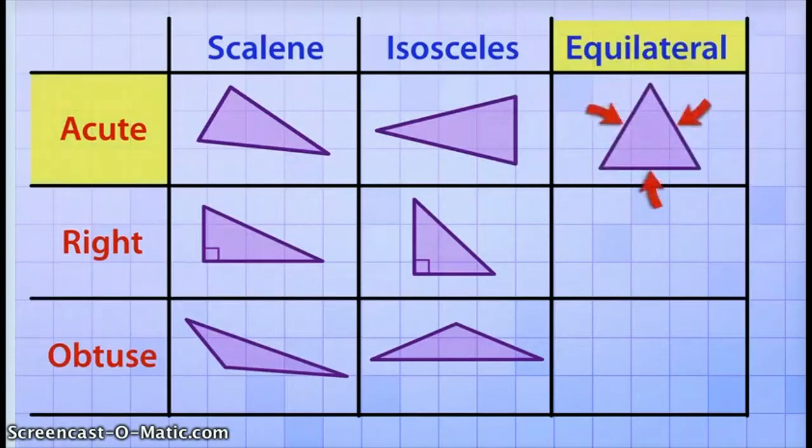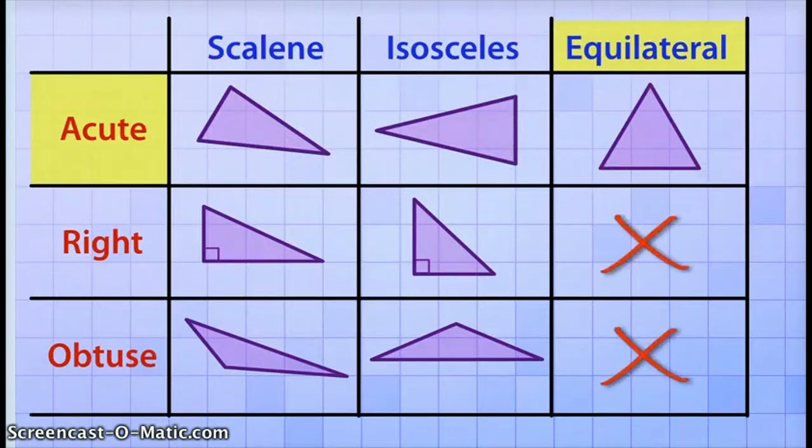But things are different when it comes to an equilateral triangle. An equilateral triangle is always an acute triangle. Because all three sides are exactly the same, all three angles must also be exactly the same. And since we can't have more than one right angle in a triangle, or more than one obtuse angle, all the angles in an equilateral triangle must be acute.